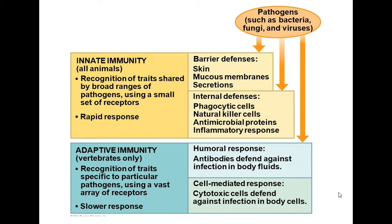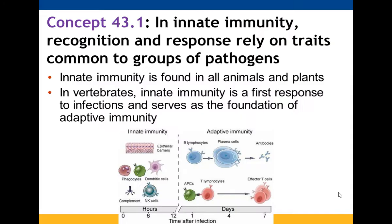Examples of innate immunity include barrier defenses like skin, mucous membranes, and secretions, as well as internal defenses involving certain cells and proteins, and the inflammatory response. Adaptive immunity only applies to vertebrates. It's a bit slower but more specific, with a humoral response affecting interstitial fluid, blood, and lymph, and a cell-mediated response targeting infected cells.